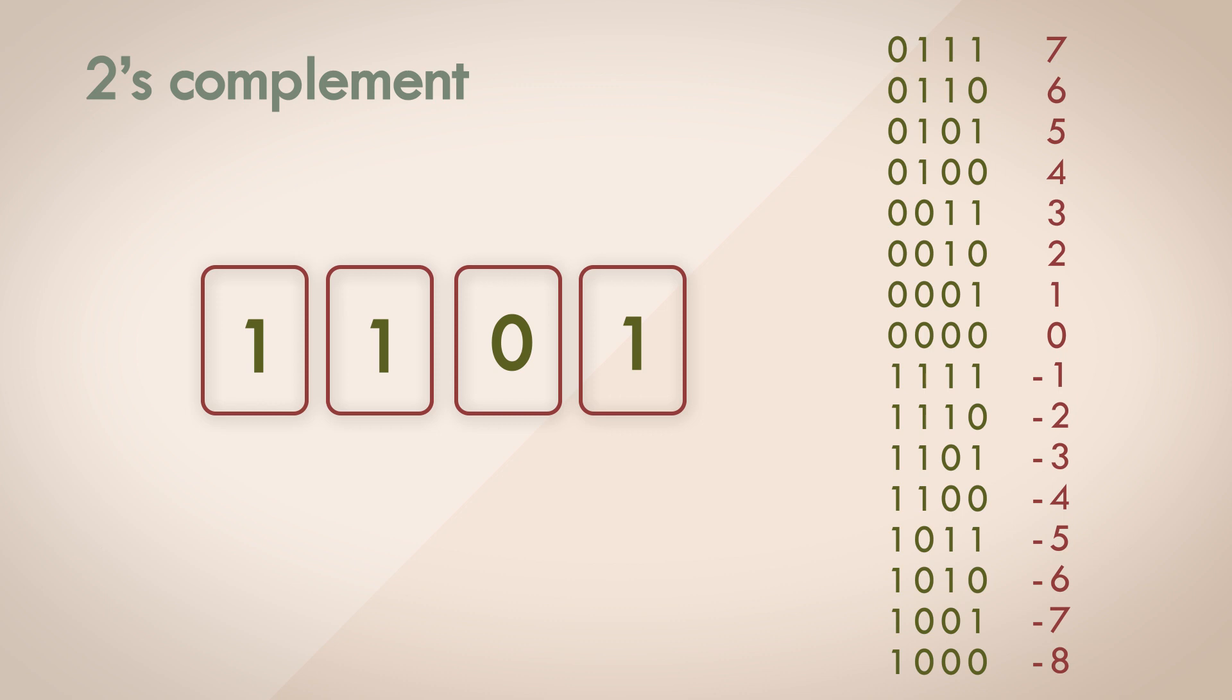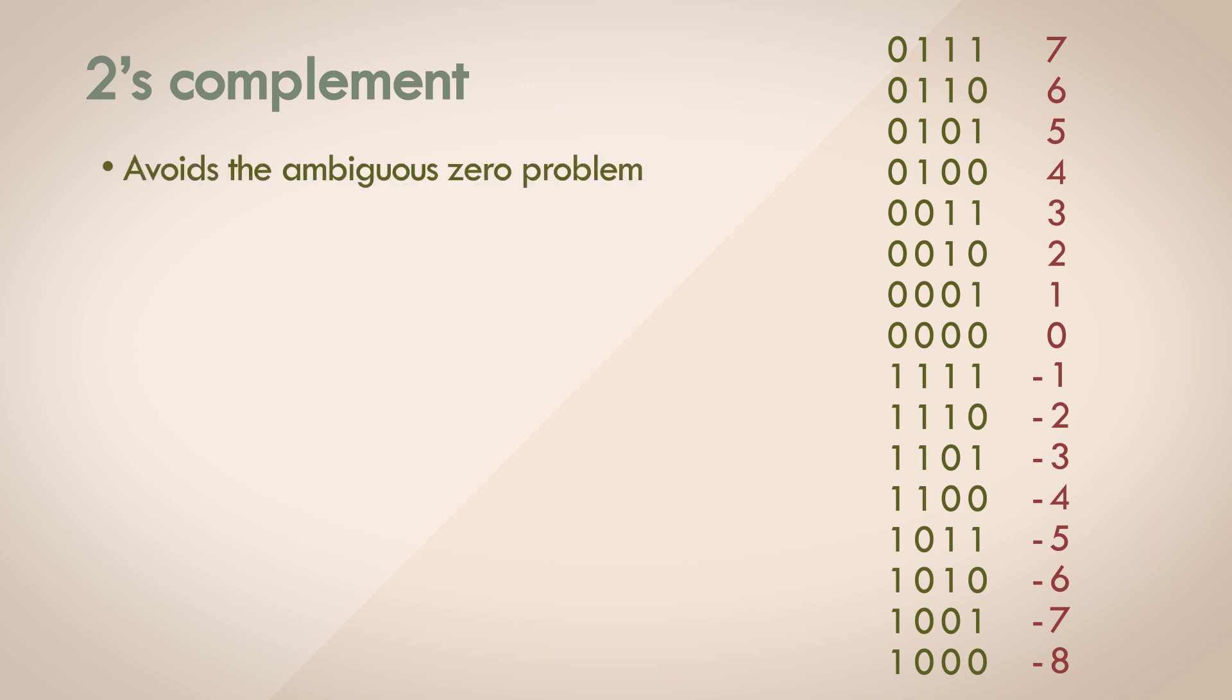As long as the most significant bit is 1, the number is negative. Once the most significant digit is flipped to 0, the numbers are positive and follow the familiar logic that's easy for us to understand. With 2's complement representation, you also avoid the ambiguous 0 problem. 2's complement of 0 is 0 itself, so you don't have to worry about a redundant 0 that we saw with the sign and magnitude representation.